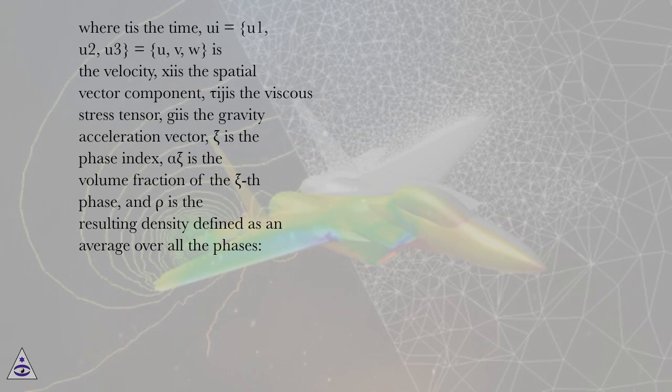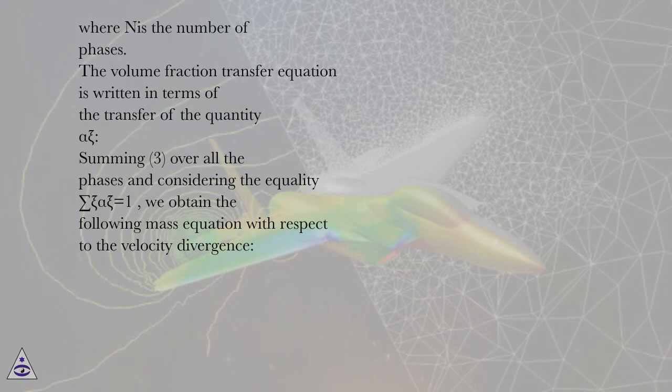Where t is the time, ui equals u1, u2, u3, equals u, v, w, is the velocity i-th spatial vector component, tau_ij is the viscous stress tensor, g is the gravity acceleration vector, zi is the phase index, alpha_zi is the volume fraction of the zi-th phase, and rho is the resulting density defined as an average over all the phases, where n is the number of phases.